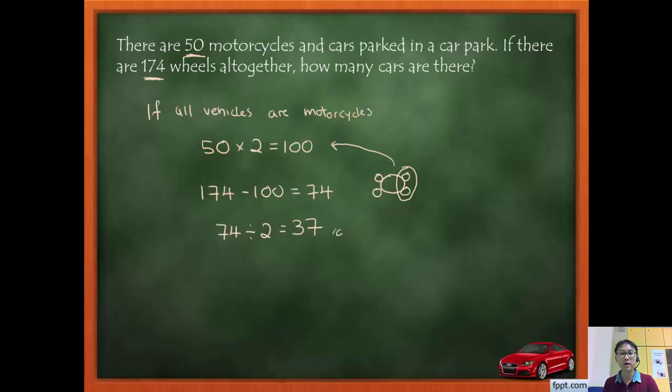Alright, now to check, very simple, you take 37. So this is my checking. 37 times 4, 37 times 4 will give me 148. So these are the cars, the wheels of the cars.